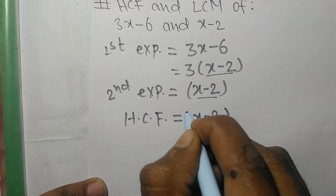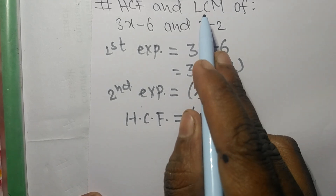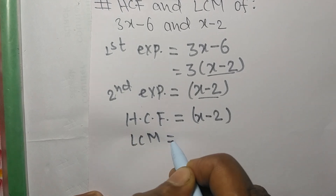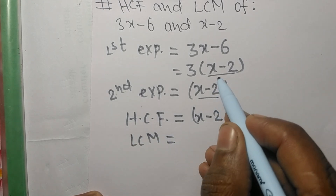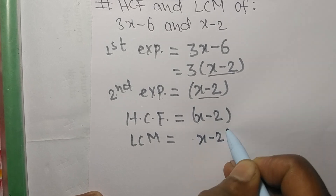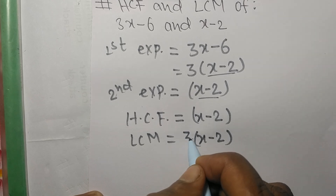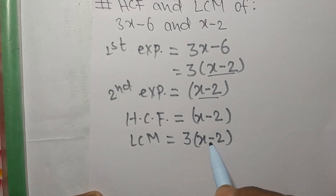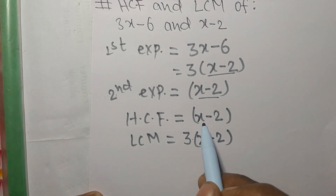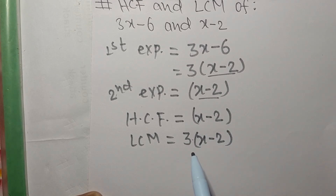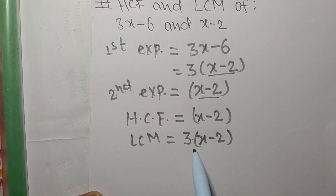To find the LCM, we take the common factor (x - 2) and also include the remaining factor, which is 3. So the LCM is 3 times (x - 2). In summary, the HCF contains only the common factors, which is (x - 2), while the LCM includes both common and remaining factors, giving us 3(x - 2). That's all for today — thanks for watching.